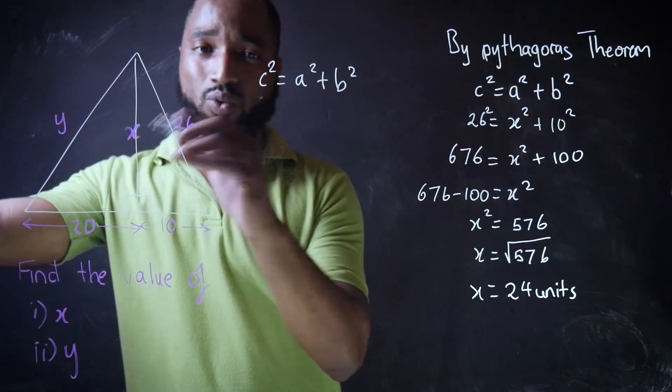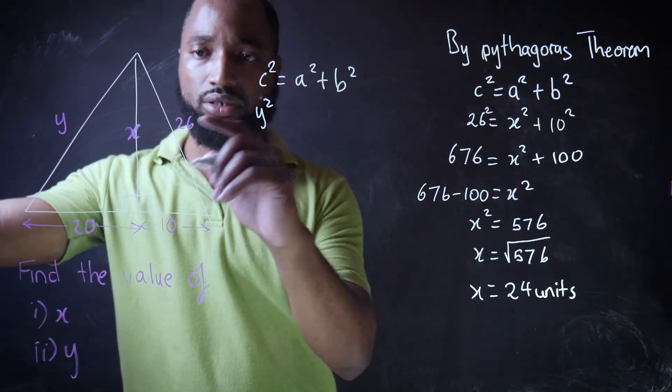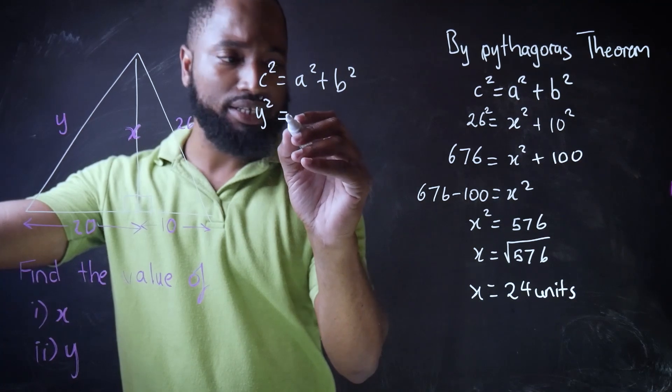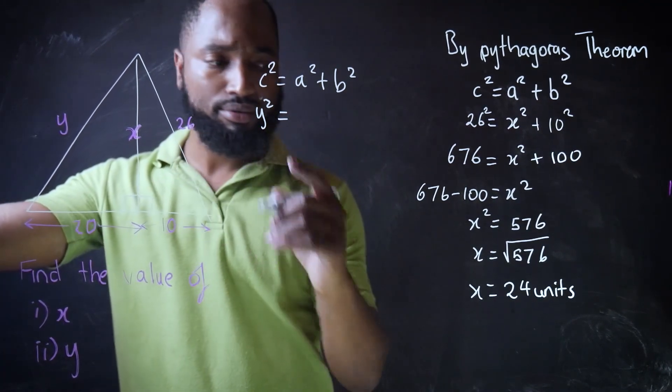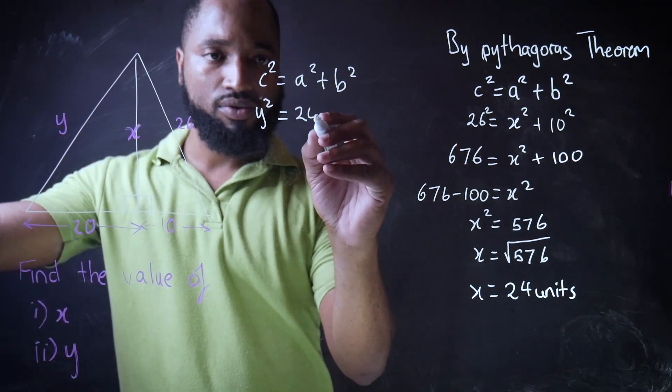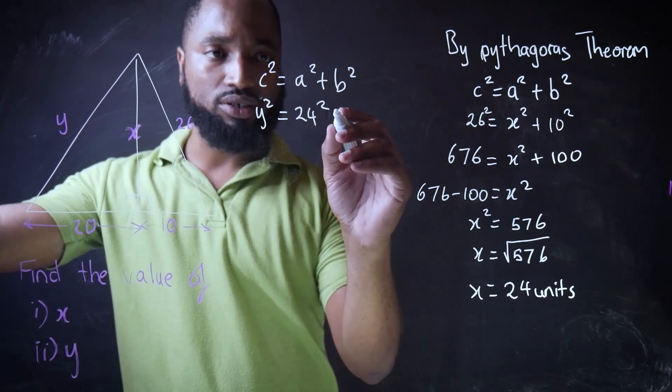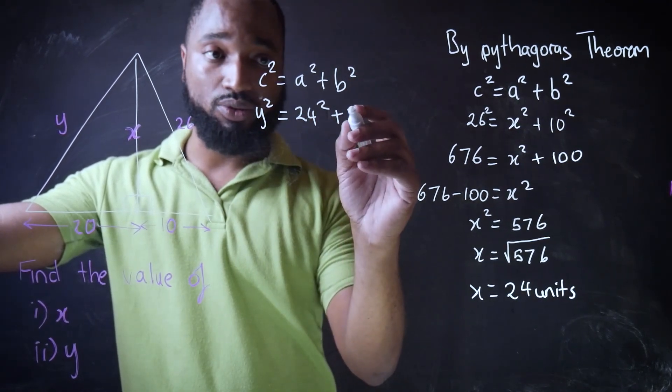In this case, C is Y. But X, we already know X. X now is 24. And Y is 20. B, sorry, is 20.